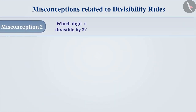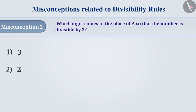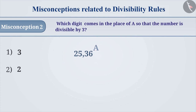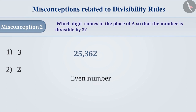Misconception 2: Which digit comes in the place of 'a' so that the number is divisible by 3? If we put 3 in the place of 'a', then the number becomes 25,363. Sometimes, there is a misunderstanding that since the last digit of the number is 3, the number will be divisible by 3. If we put 2 in the place of 'a', then the number becomes 25,362, which is an even number. Another misunderstanding is that division of an even number by an odd number is not possible. Because of this misunderstanding, option 2 is considered as wrong and option 1 is chosen, which is incorrect.